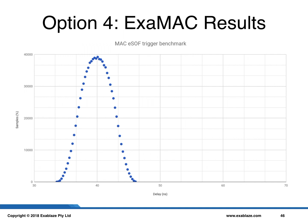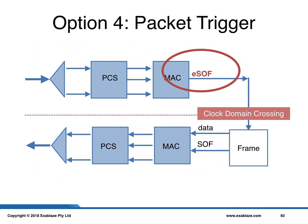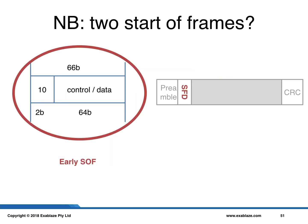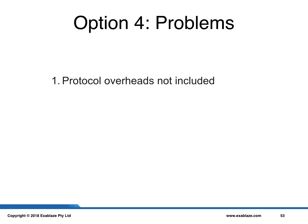The results of the packet trigger measurement show an average of 39.83 nanoseconds and a minimum of 33.58 nanoseconds — an incredibly low-latency performance, so good you might think it's not real. And there is a problem: the early start-of-frame signal used for crossing into the transmit clock domain is presented in the PCS layer, meaning the start-of-frame signal triggers several cycles earlier than the MAC layer. It is arguable whether this provides useful information or whether we are simply gaming the system. Option 4 does not include protocol overheads and is potentially gameable.